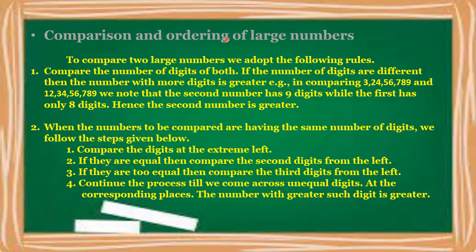Comparison and ordering of large numbers. To compare two large numbers, we adopt the following rules. Rule 1: compare the number of digits of both numbers. If the number of digits are different, then the number with more digits is greater.